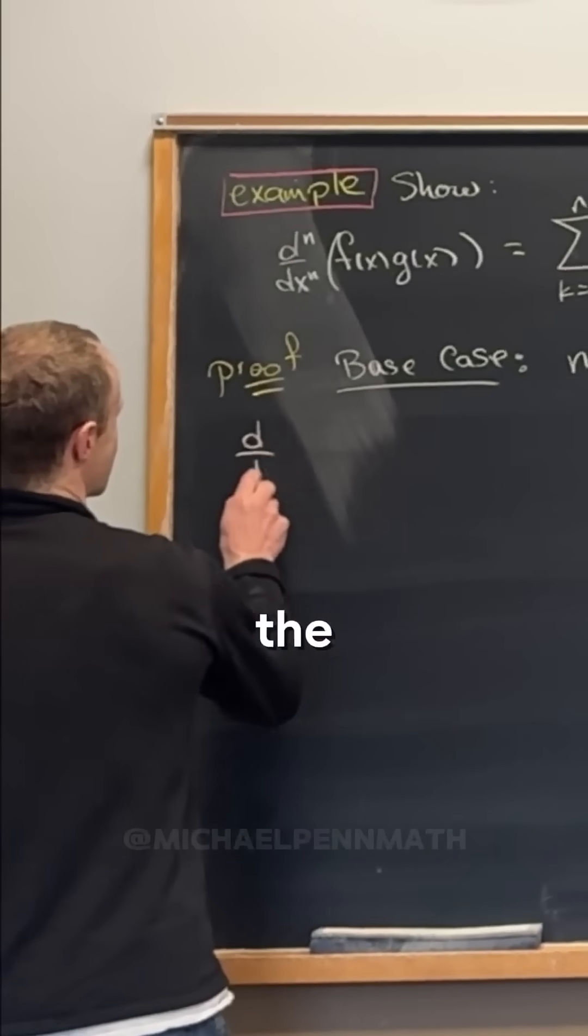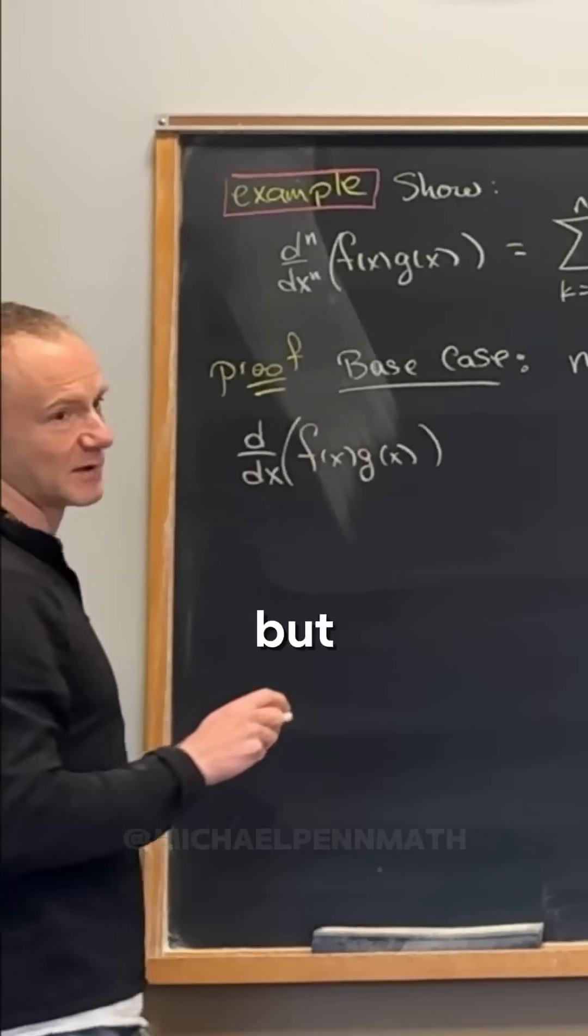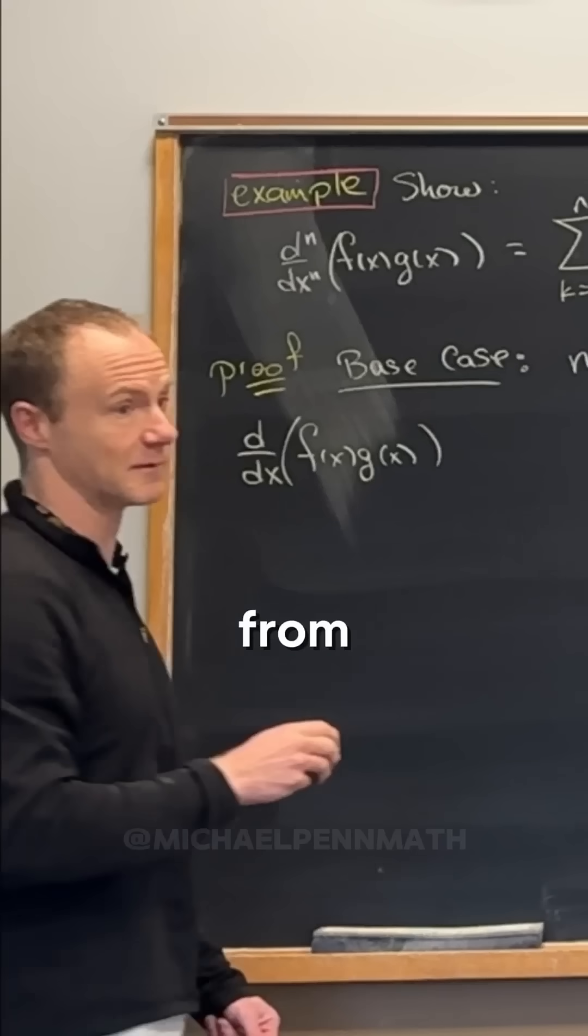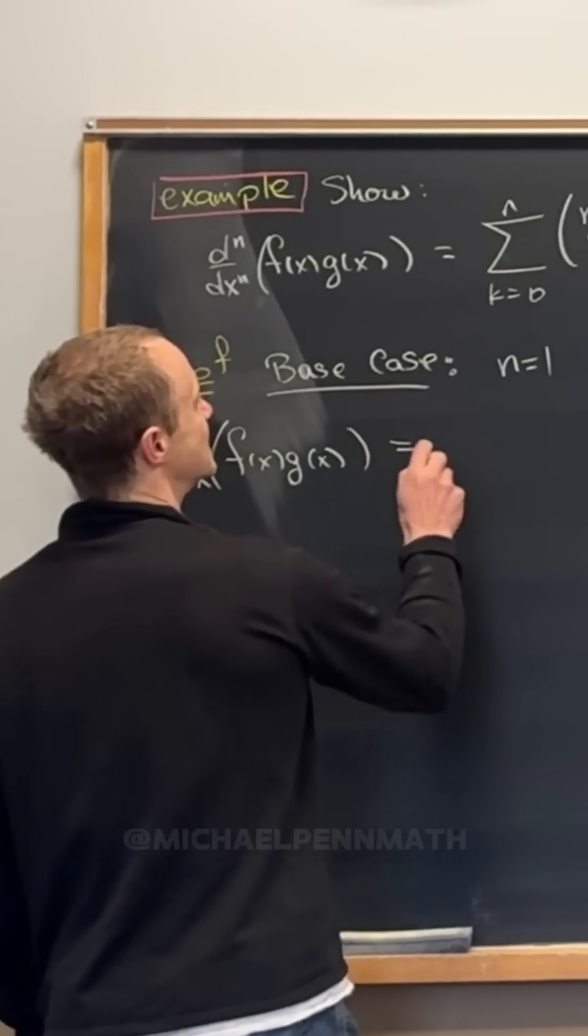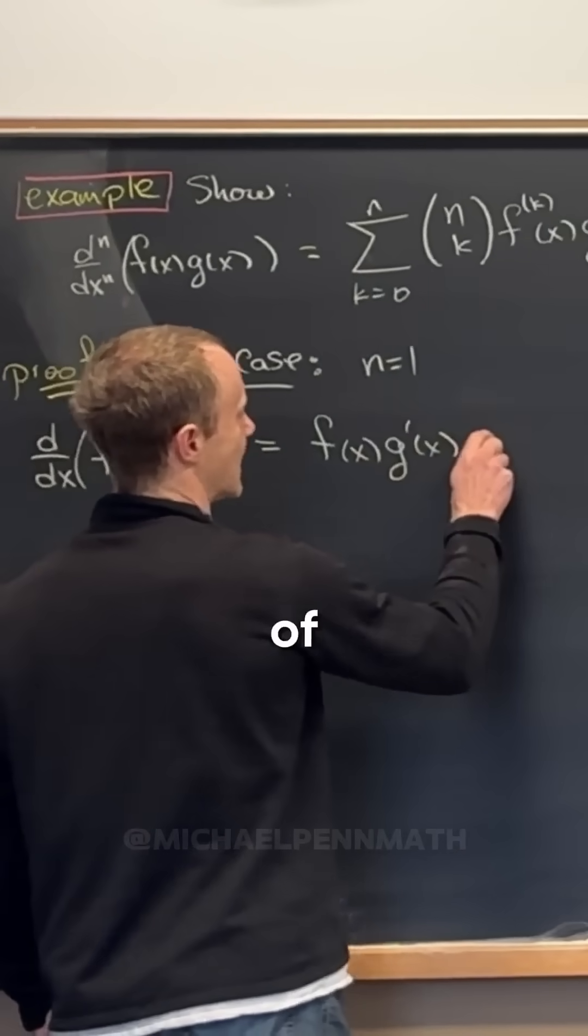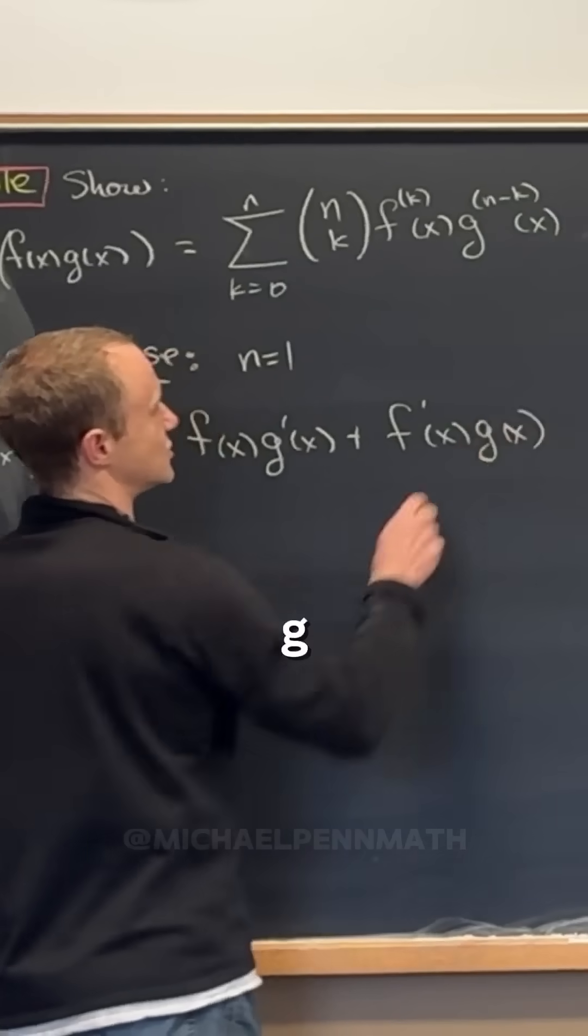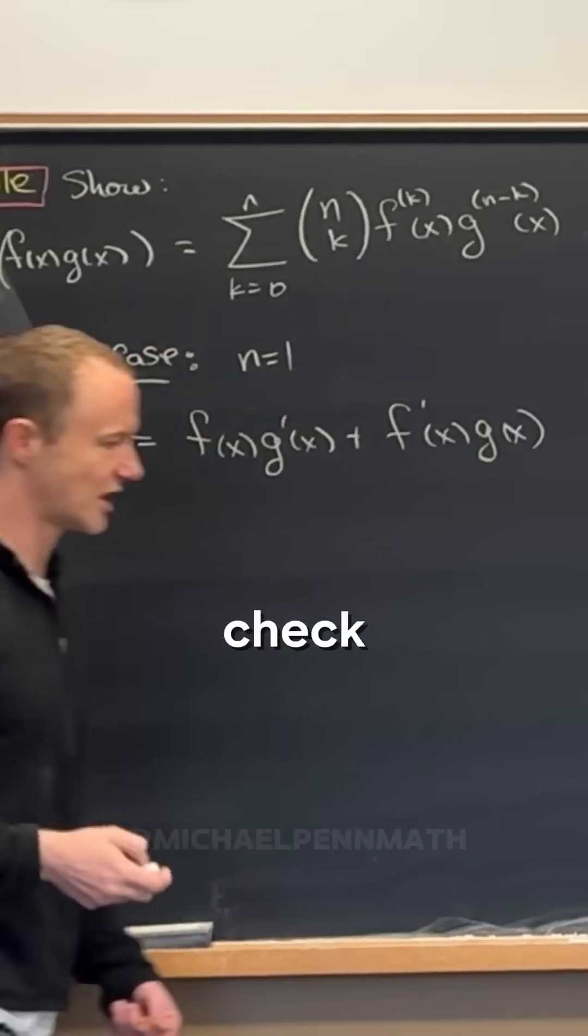That means we're going to take the derivative with respect to x of f(x) times g(x). But we all know what that is from calculus, right? That's going to be f(x) times g'(x) plus f'(x) times g(x). But check it out.